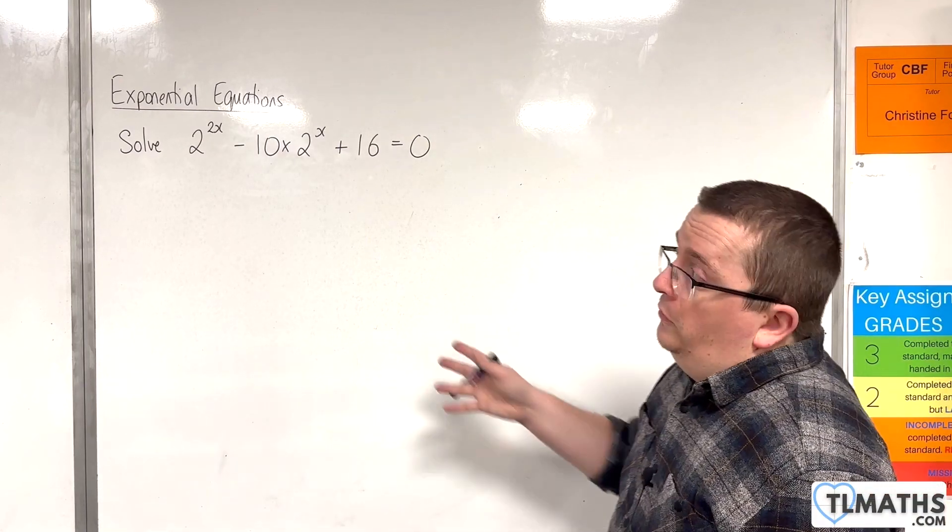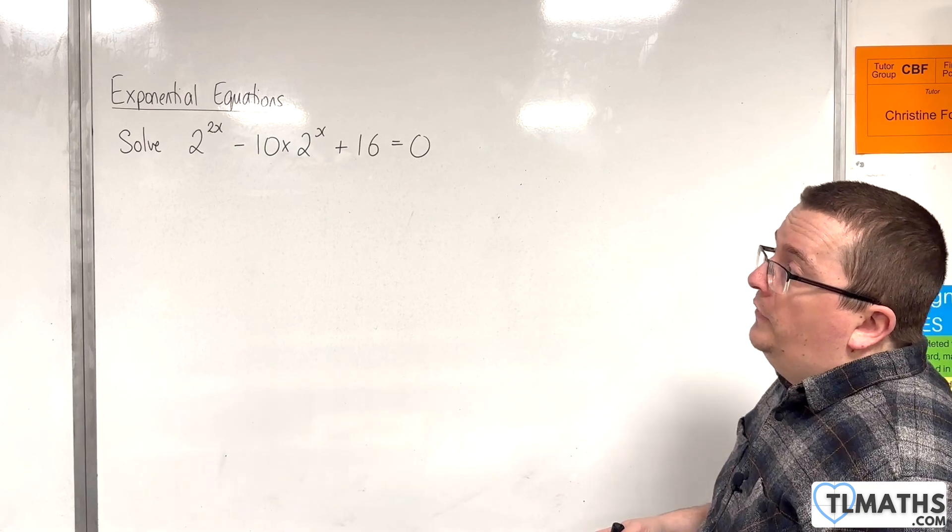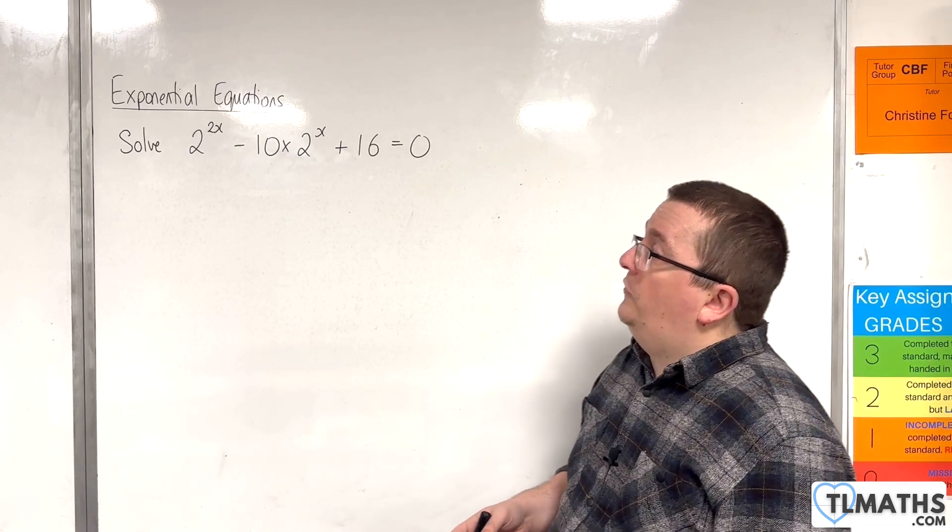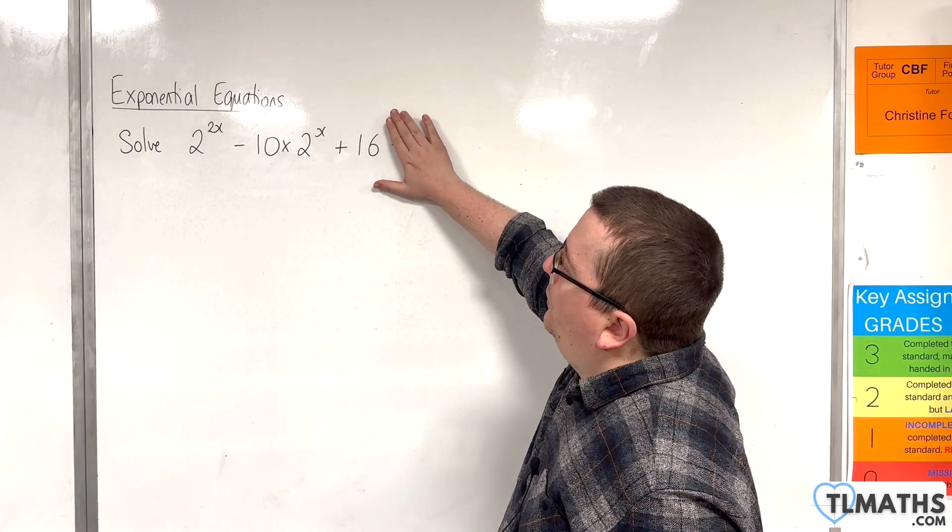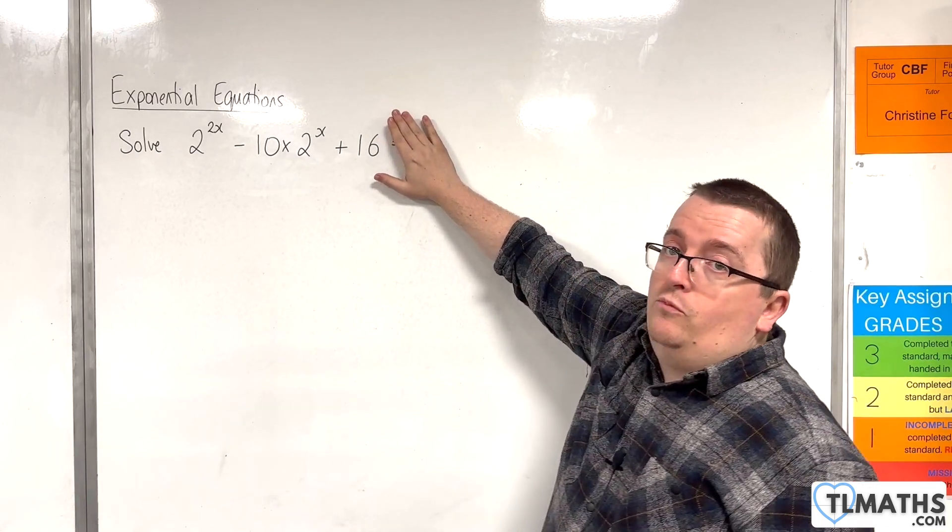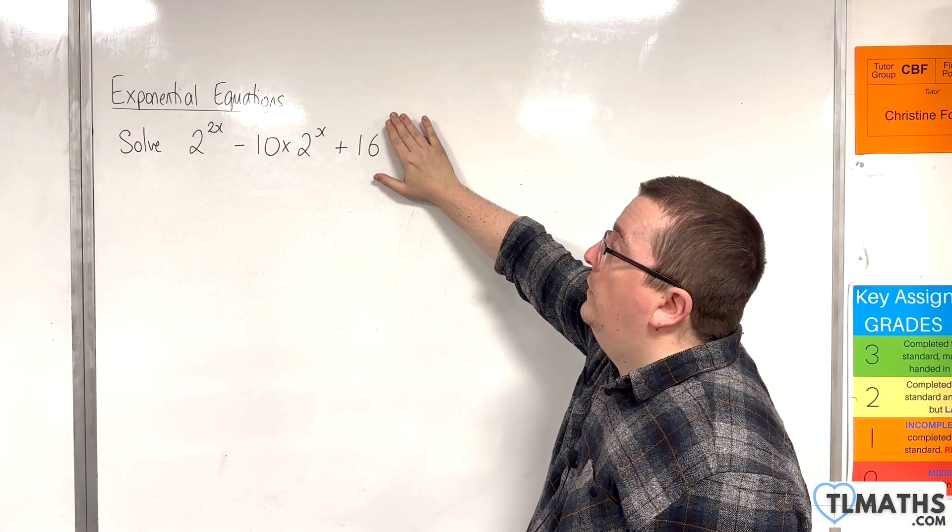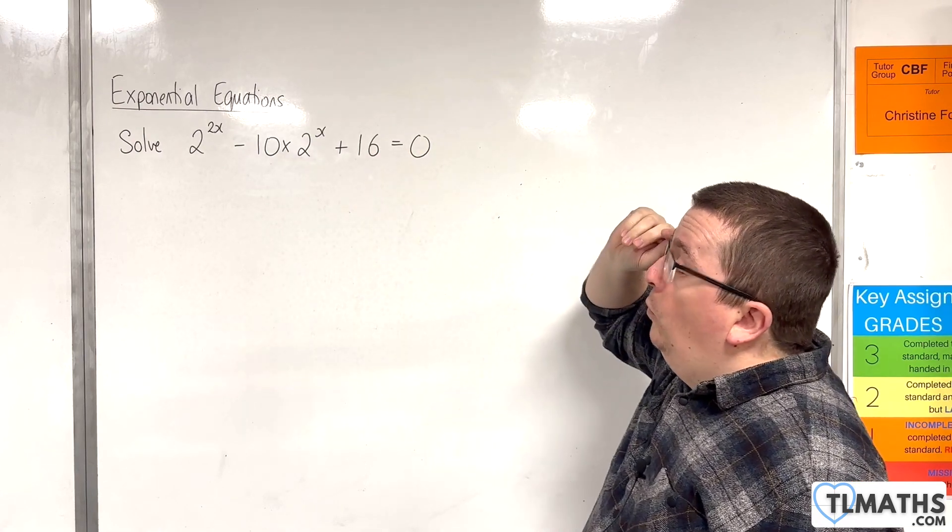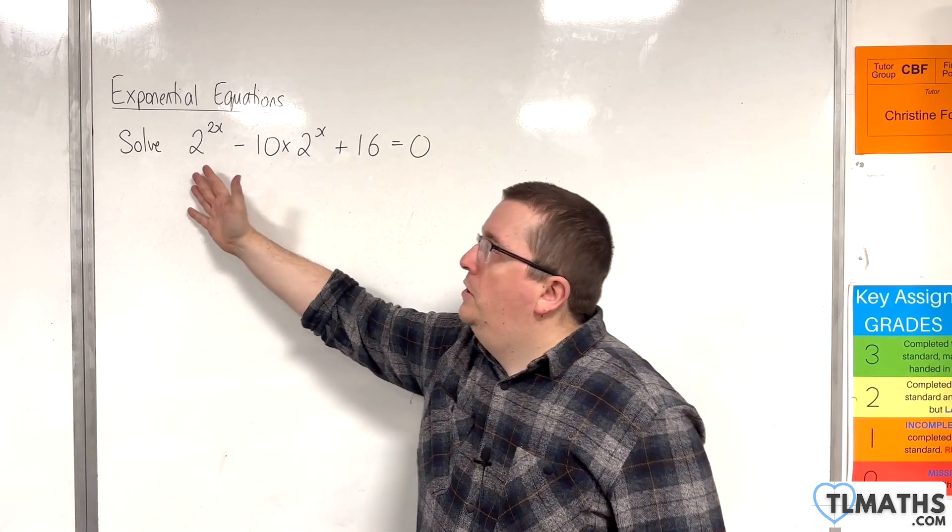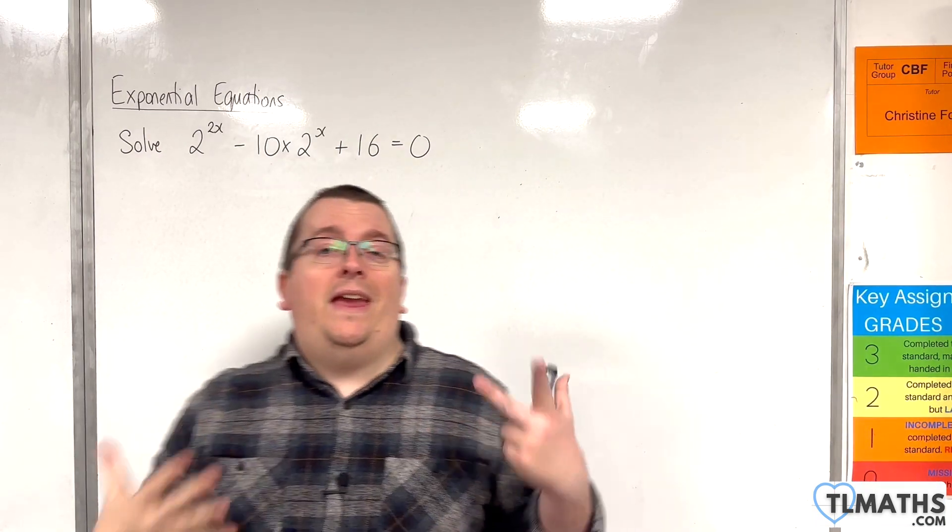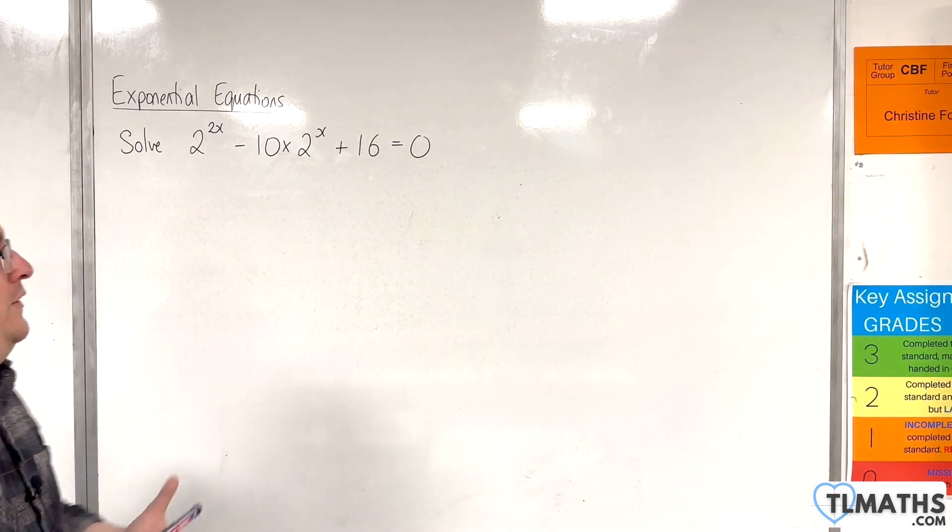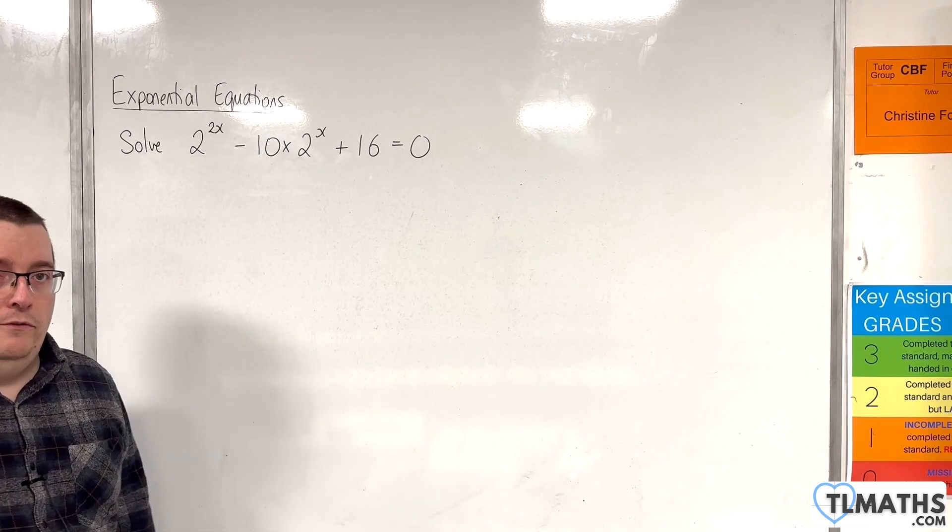In this video, we're going to solve 2 to the power of 2x, take away 10 times 2 to the x plus 16 equals 0. That left-hand side expression is what we were looking at in the previous video where we were factorizing. What we need to be able to do is look at an equation like that and know that actually it is a hidden quadratic, a quadratic in disguise for us to solve.